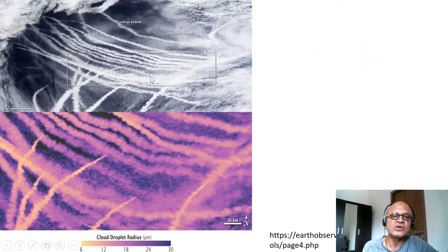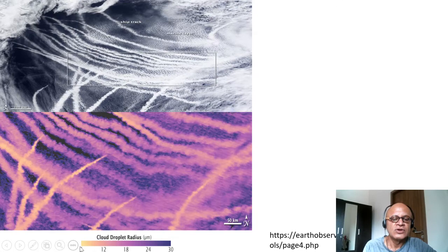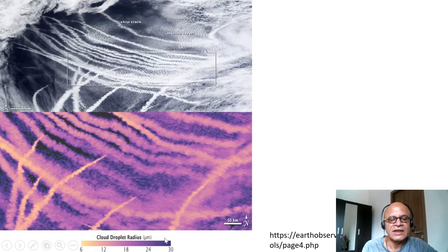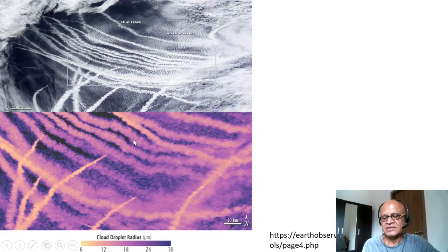Here is another way to look at natural experiments offered by planes and ships. You look at cloud droplet radius. As the cloud droplet radius decreases in micrometers, you get brighter clouds. When the cloud droplet size increases, they get darker. That's a very simple idea.